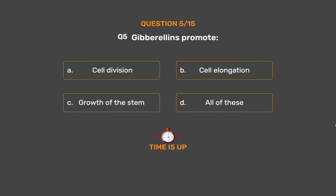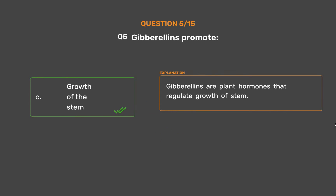The correct answer is Option C, Growth of the stem. Gibberellins are plant hormones that regulate the growth of the stem.